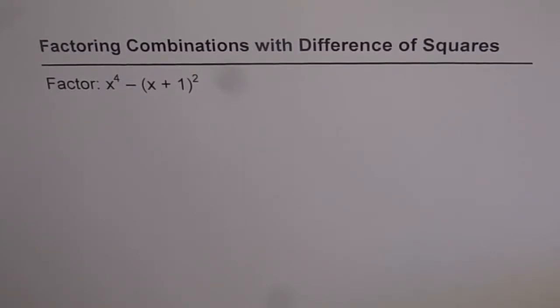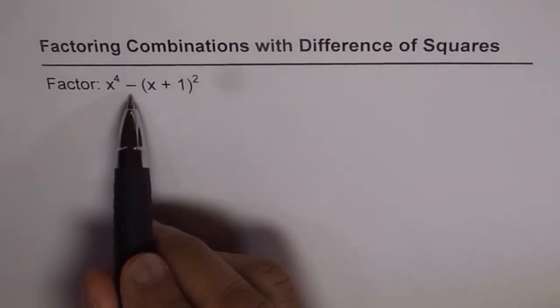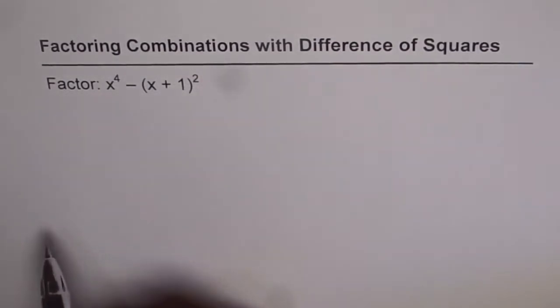Now we are taking some special cases of factoring where the factoring can be done more than once. Now here we see that the degree is also not just 2 but 4. So let's look into the expression. It is x to the power of 4 minus x plus 1 whole square.